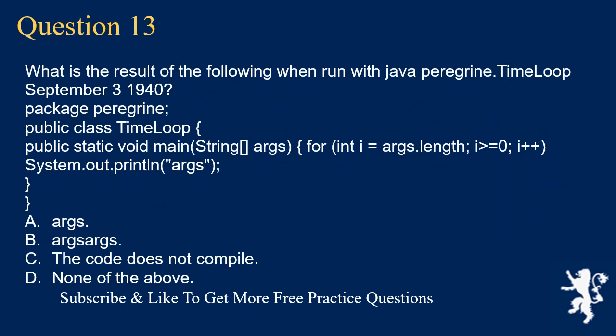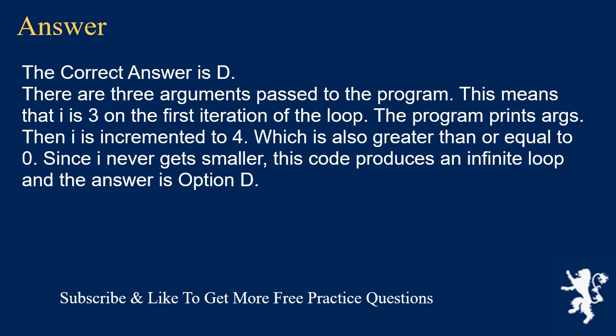Question 13. What is the result of the following when run with java peregrine.TimeLoop September 3 1940? The loop iterates: for (int i = args.length; i >= 0; i++). A. args. B. args args. C. The code does not compile. D. None of the above. The correct answer is D. There are three arguments passed to the program. This means i is three on the first iteration. The program prints args[3], then i is incremented to four, which is also greater than or equal to zero. Since i never gets smaller, this code produces an infinite loop and the answer is option D.